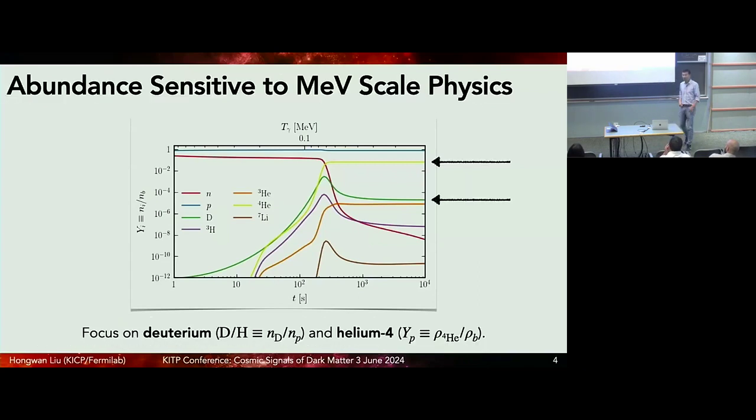These kinds of abundances, if you can measure them, are going to be very sensitive to physics happening at the MeV scale. The focus, at least so far on BBN, has been looking at the deuterium abundance and the helium-4 abundance. You might see some of these symbols here. D over H is essentially the number density of deuterium to all free protons. For helium-4, we usually talk about this symbol Yp, which for historical reasons is the energy density of helium-4 divided by the total energy density of baryons.